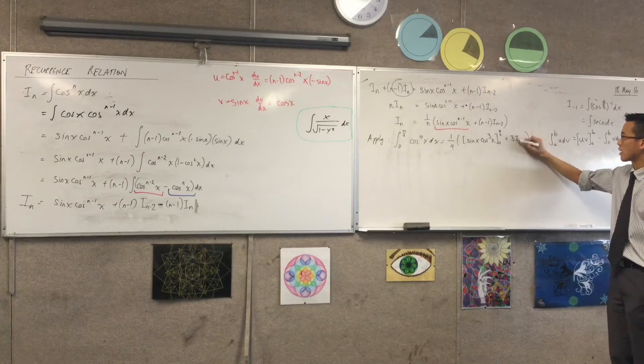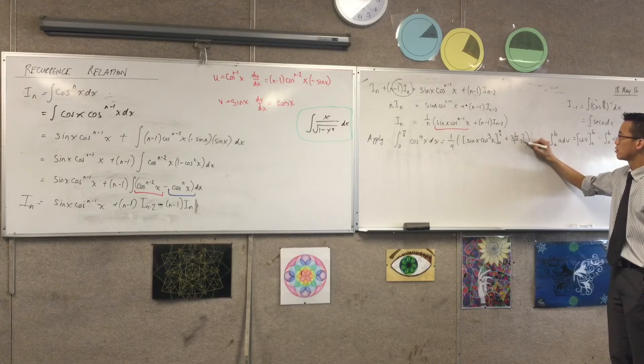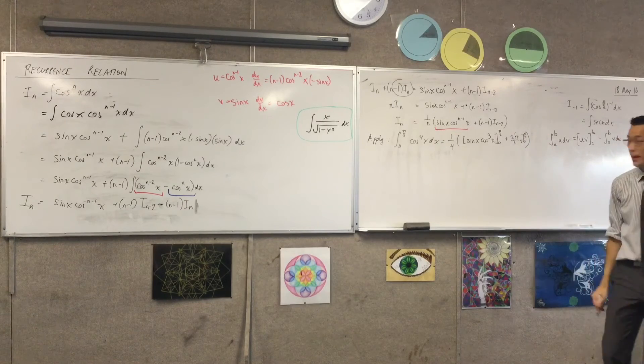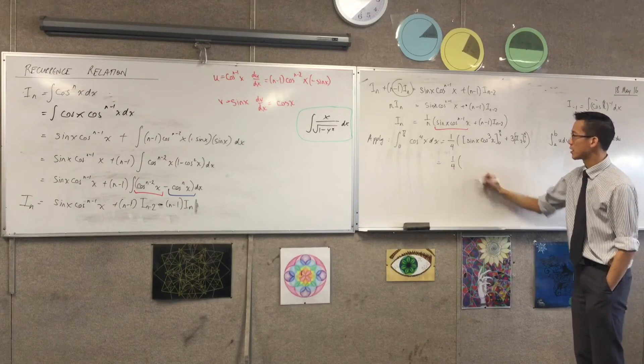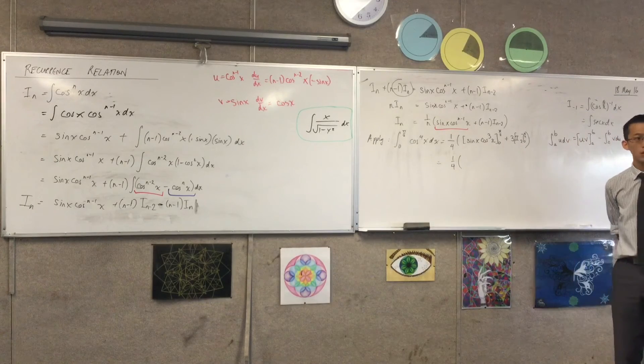Done. I suppose, strictly speaking, I should put the boundaries here, 0 to π/2, okay? I can move further through this, I can actually evaluate this first thing. Let's have a look. When you evaluate it at π/2, what do you get?